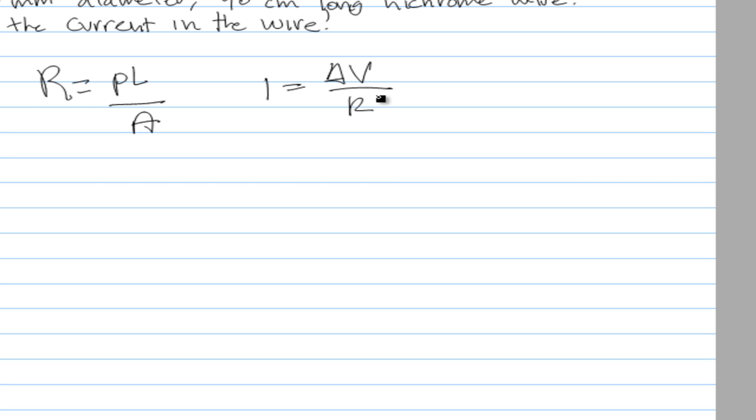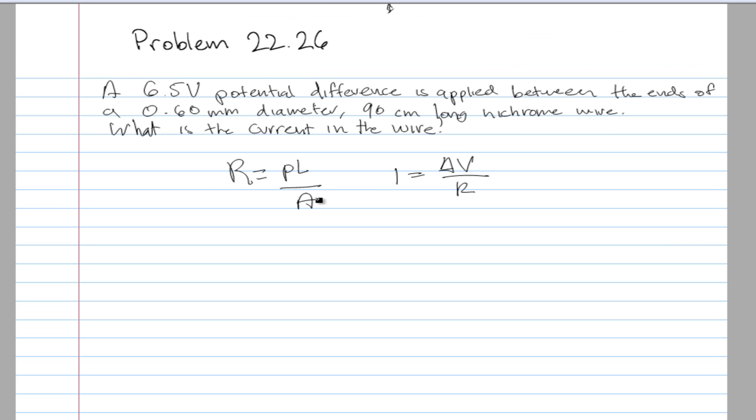To calculate the resistance we need the area and the length of the wire and the resistivity of nichrome. The resistivity of nichrome we can find from the book, which happens to be 1.5 times 10 to the negative 6. This can be found on page 721.